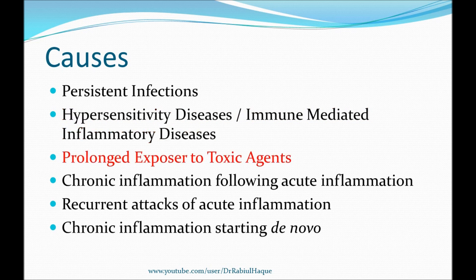The next cause of chronic inflammation is prolonged exposure to potentially toxic agents. These toxic agents can be exogenous or endogenous. An example of an exogenous toxic agent is silica — a non-degradable material that if inhaled for a long period of time can cause silicosis, a type of inflammatory lung disease. An example of an endogenous toxic agent includes toxic plasma lipid components that can cause atherosclerosis in the long run.